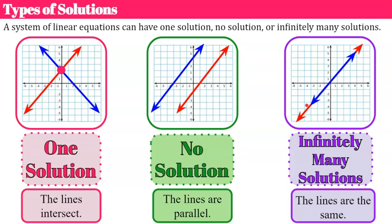To review: we can have one solution when the lines intersect. If the lines are parallel, we will have no solution. And if the lines are the same, we're going to have infinitely many solutions.